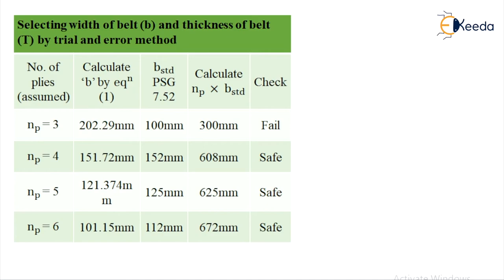We have referred the value of B that is width of the belt which is standard from PSG 7.52 as 100 mm, 152 mm, 125 mm and 112 mm respectively for NP is equal to 3 to 6.